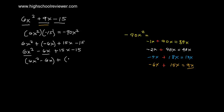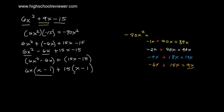Since 15x is positive and 15 is negative, we factor each group. From 6x squared minus 6x, we factor out 6x to get 6x times quantity x minus 1. From 15x minus 15, we factor out 15 to get 15 times quantity x minus 1. Both groups share the common factor x minus 1, so we can combine the outer terms 6x plus 15.